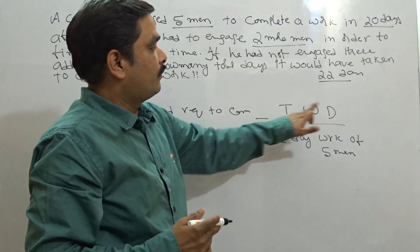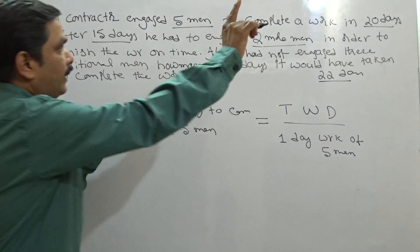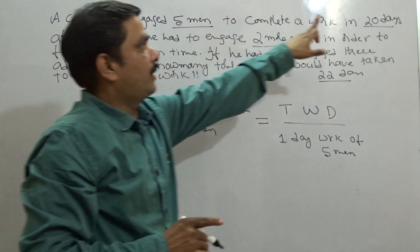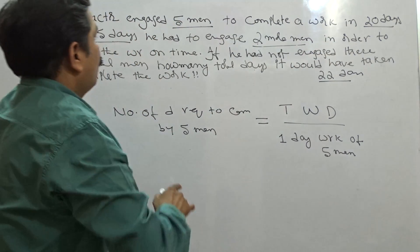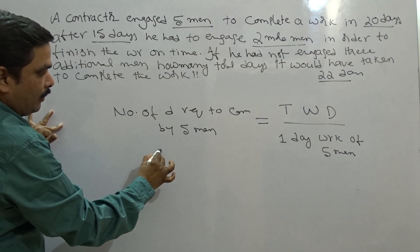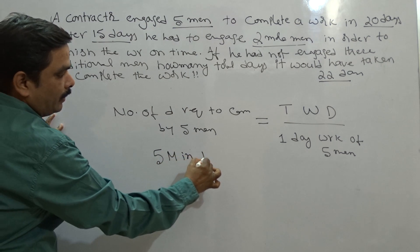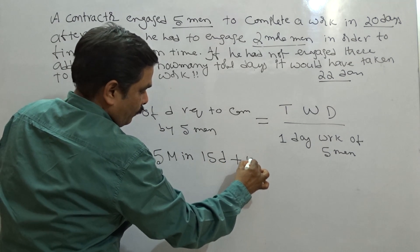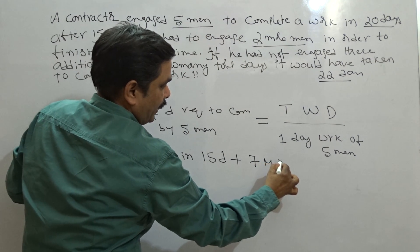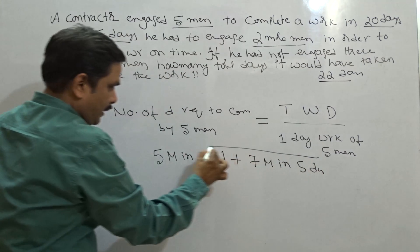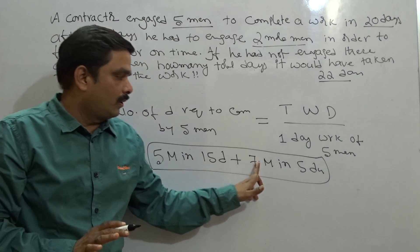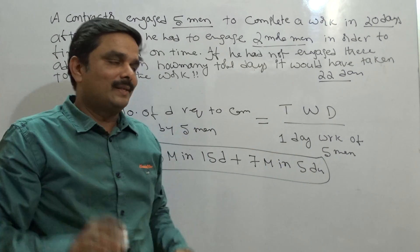But how to find out the total work done? Total work done is: first, five men work for fifteen days, then five plus two — seven men — work for five days, because the work is completed in twenty days anyway. So work done by five men in fifteen days, plus work done by seven men in five days — that is the complete total work.